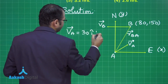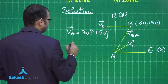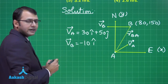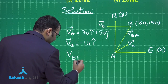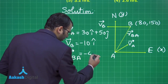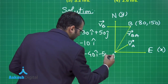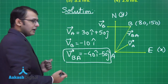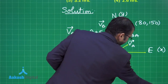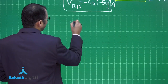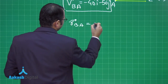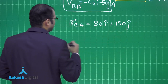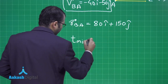Velocity of A is 30î + 50ĵ km/h. Velocity of B is minus 10î km/h. The relative velocity of B with respect to A is therefore minus 40î minus 50ĵ km/h. The relative position of B with respect to A is 80î + 150ĵ km.